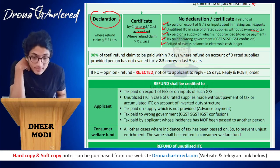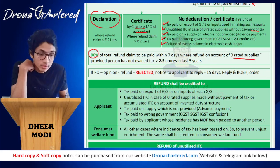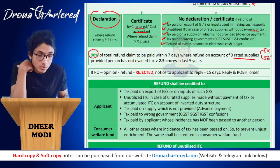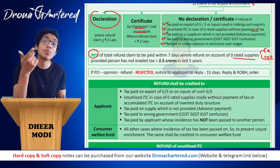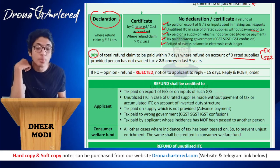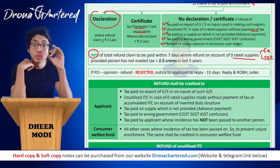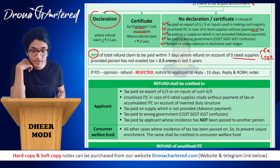90 percent of the total refund claim is to be paid within seven days where the refund is on account of zero-rated supplies — that is exports and supply to SEZ. In these cases there is no output tax liability but you get ITC on your input supplies, provided the person has not evaded tax greater than 2.5 crores in the last five years. Only then will 90 percent of the refund be paid within seven days on account of zero-rated supplies.